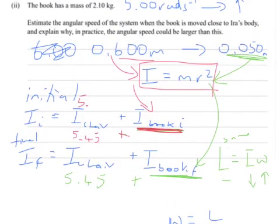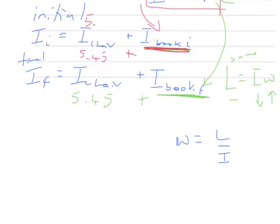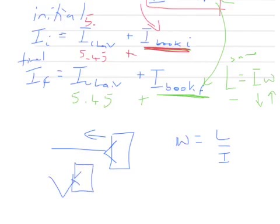In practice, the angular speed could be larger than this. It's because this is not a perfect system. As the person moves the book closer, their arms are going to bend and some of the mass of the arms will also be closer to the center. So there's a greater mass coming closer to the center of rotation than just the book.